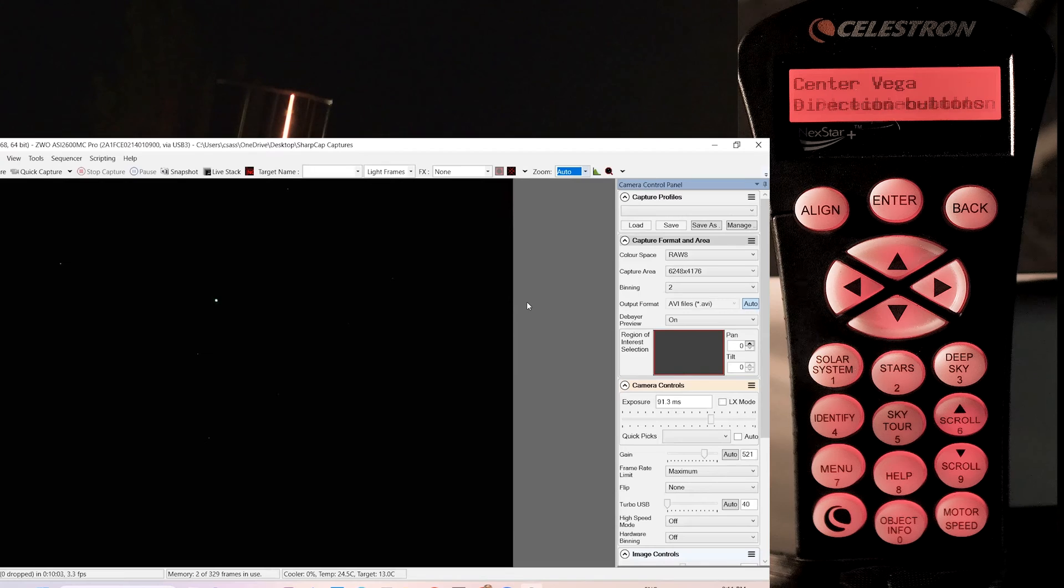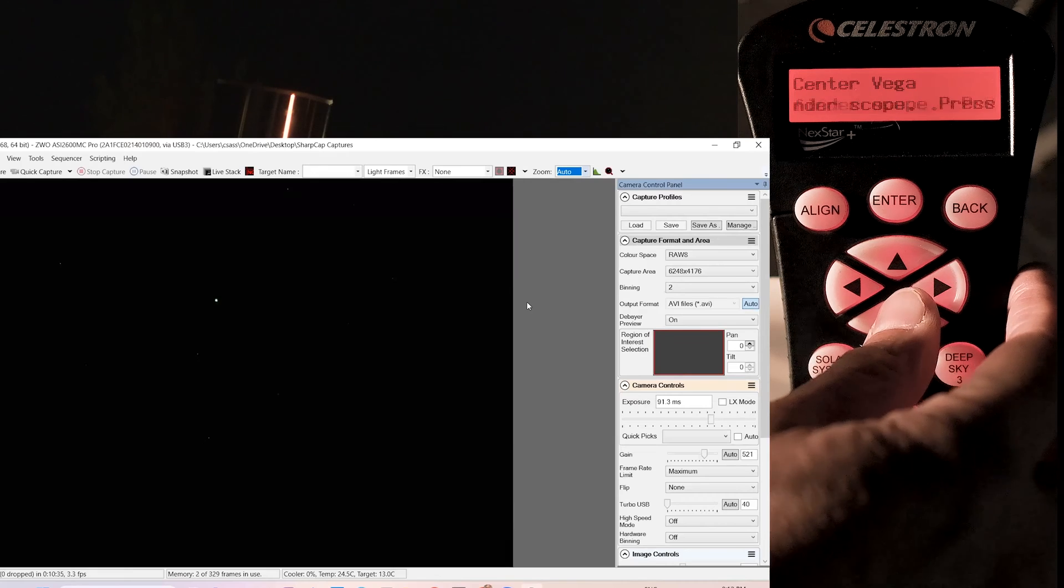Okay, let's look at the computer screen. I'm using a program called SharpCap Pro. So you can see Vega is this bright spot there, the star that we're looking at, which is centered in the StarSense Autoguider, but it is not centered on the screen. So now the menu is asking us to center it.